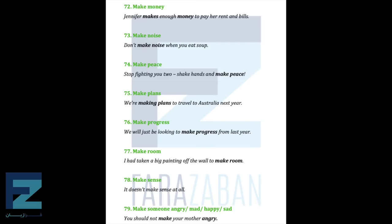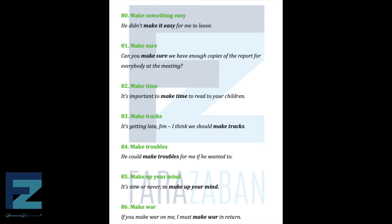Make furniture — In their spare time they make furniture. Make money — Jennifer makes enough money to pay her rent and bills. Make noise — Don't make noise when you eat soup. Make peace — Stop fighting you two, shake hands and make peace. Make plans — We are making plans to travel to Australia next year. Make progress — We'll just be looking to make progress from last year. Make room — I had taken a big painting off the wall to make room. Make sense — It doesn't make sense at all.